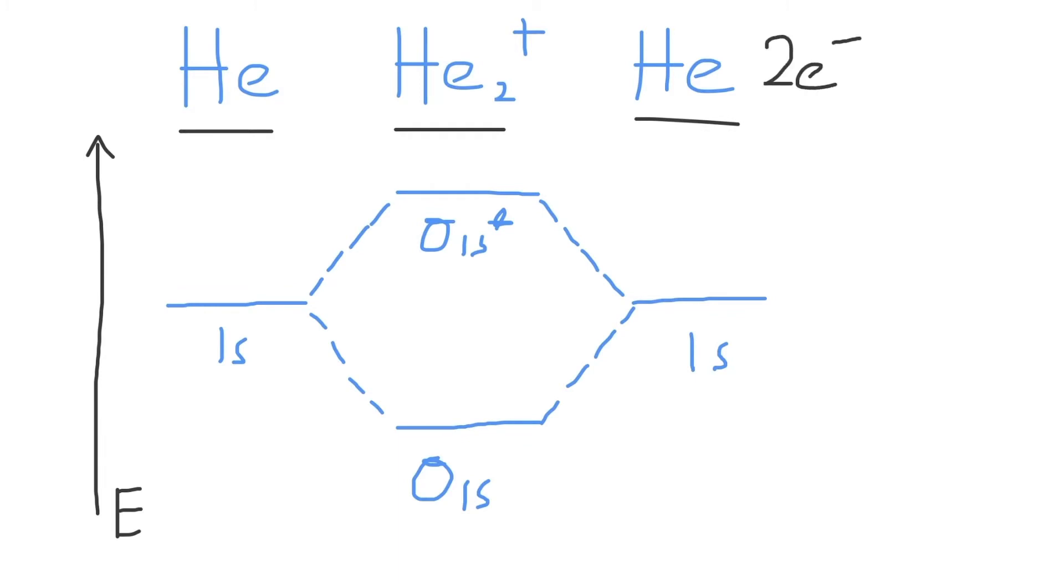But remember, we're working with He2+. So one of these helium atoms needs to be a positive cation, and so this one will only have one valence electron, as one will be taken away from the normal amount of two. Adding one and two together, we find that He2+ has three valence electrons in total.